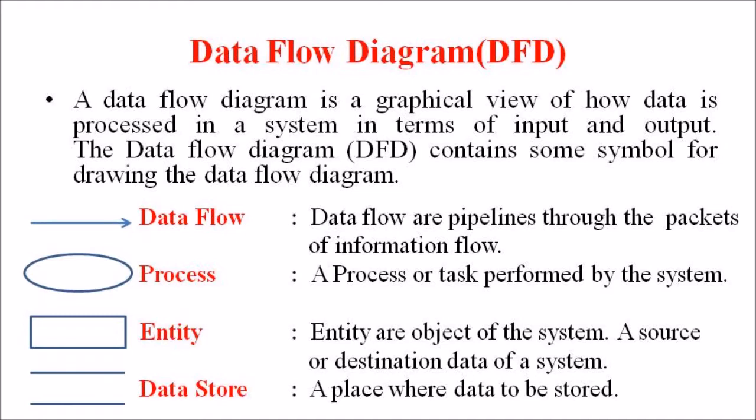Data flows are represented in a DFD by using a line with an arrowhead. Secondly, a process or task performed by a system is represented by a process symbol, and in a DFD this process is represented by an ellipse.